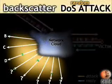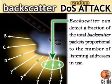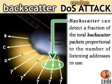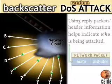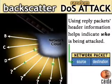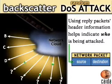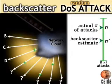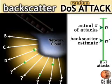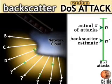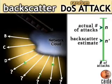The backscatter technique can detect a fraction of the total backscatter packets proportional to the number of listening addresses being used. Since the backscatter reply packets have the victim as the sender, we know who is being attacked. However, since the victim may not be able to reply to each request packet, the backscatter technique may underestimate the size of the attack. Underestimation may in fact be beneficial because it provides a minimum baseline for the number of attacks that are occurring.